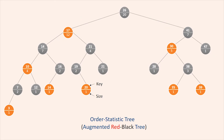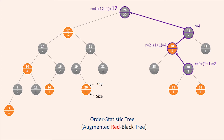As an example, when we run OS-Rank on the order statistic tree to find the rank of the node with key 38, we get the following sequence of values of r at the top of the while loop. The loop iterates only 4 times. You can see the visualization in the video. The procedure returns the rank 17. Since each iteration of the while loop takes O(1) time and y goes up one level in the tree with each iteration, the running time of OS-Rank is at worst proportional to the height of the tree — O(log n) on an n-node order statistic tree.